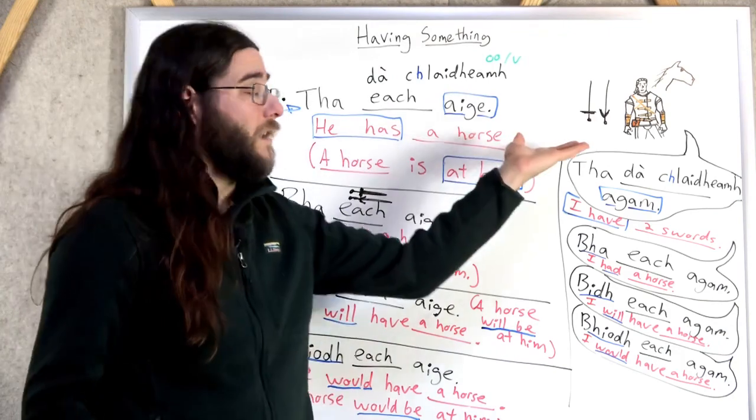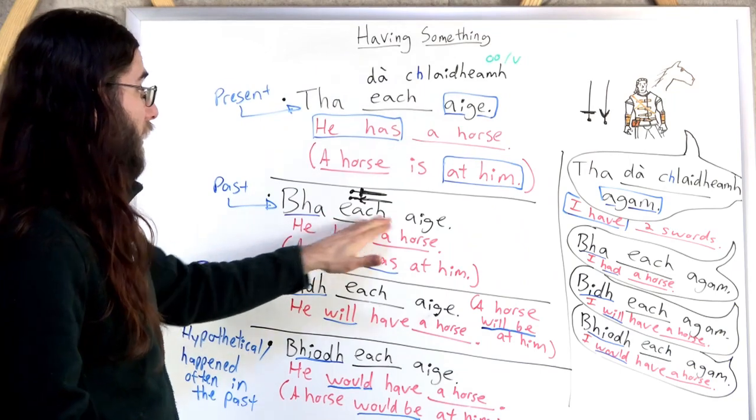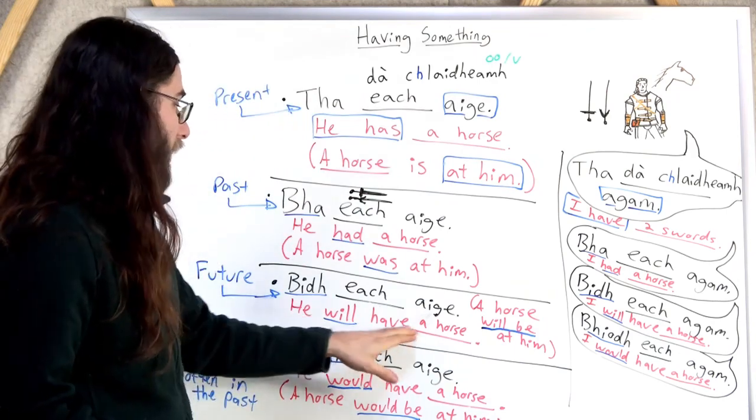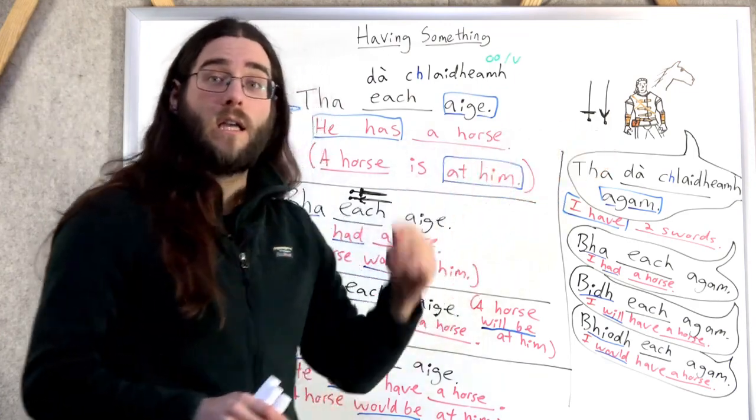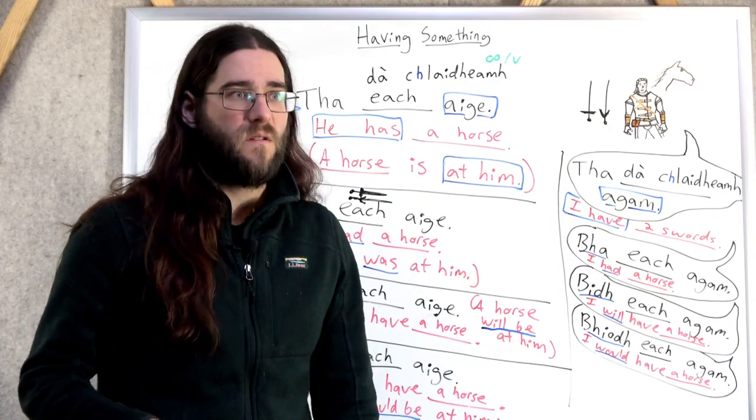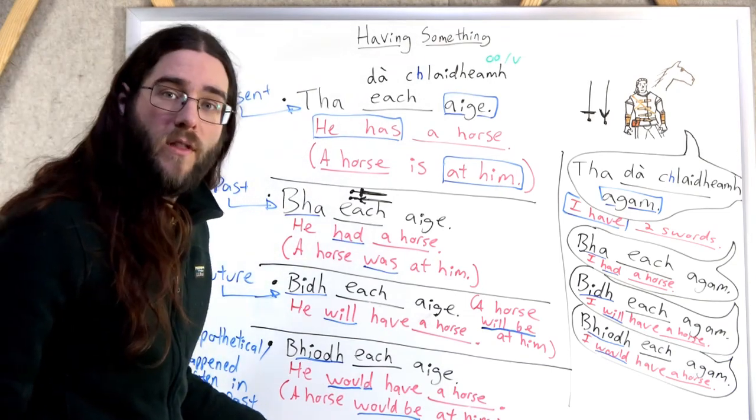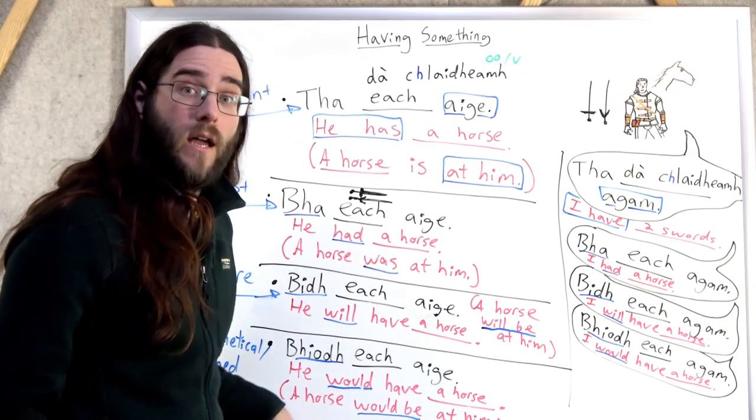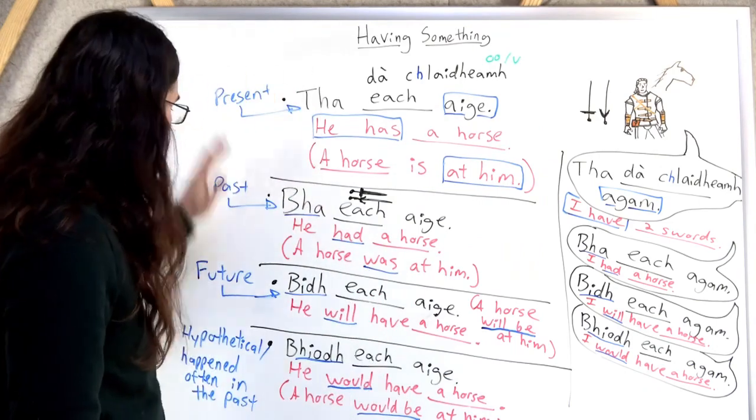Ha-each-Ikka. He has a horse right now. Va-each-Ikka. He had a horse. Bi-each-Ikka. Bi-each-Ikka. He will have a horse. Maybe a roach ran away or got stolen or who knows what. Oh, but he's going to have another horse. And then, you know, he would have a horse with him in the past. All the time. Vi-each-Ikka. Yeah. Gle-eva-maha. Gle-eva. Yeah. So here we have it. How to talk about having something in different times.